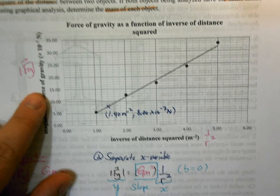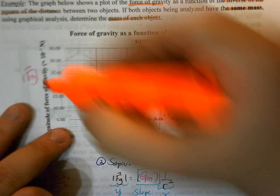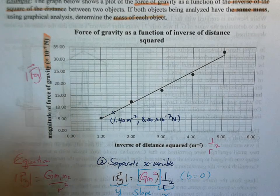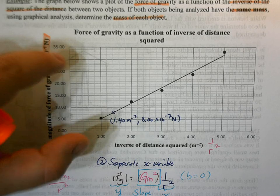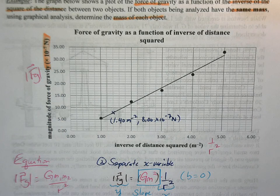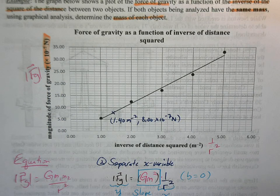So keep in mind, and this is a common trick on these graph questions, keep in mind we have that multiplier there. So all these values on the y-axis are being multiplied by 10 to the minus 7. Watch for stuff like that.